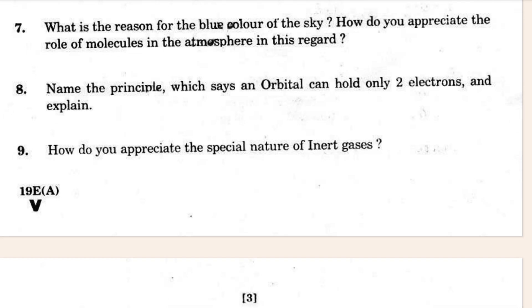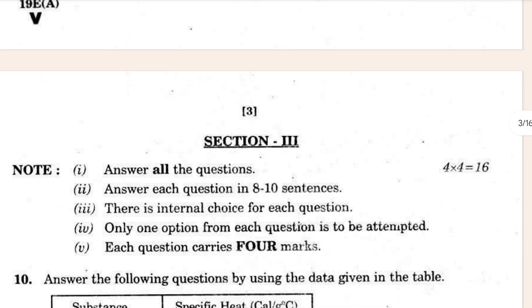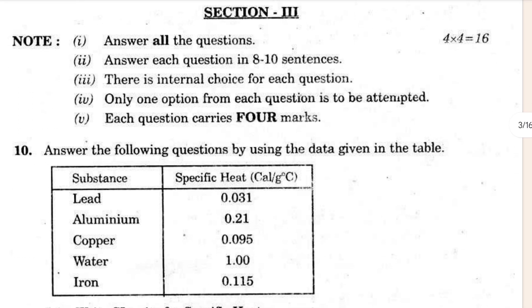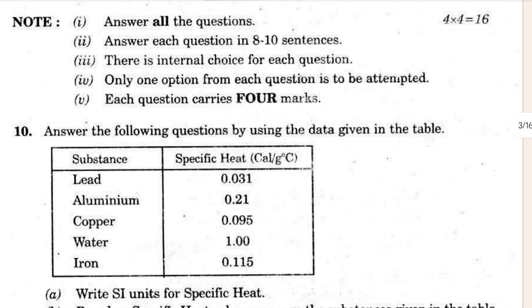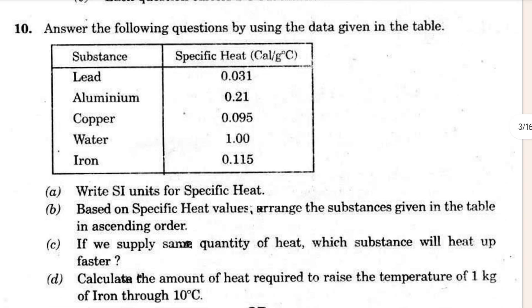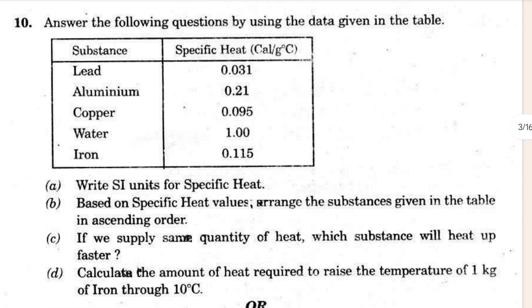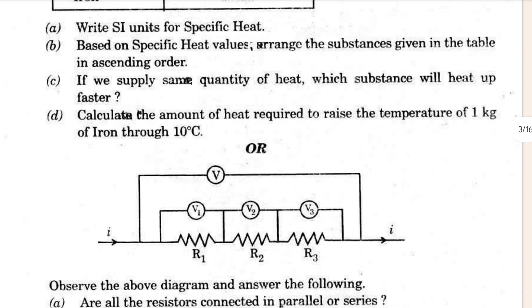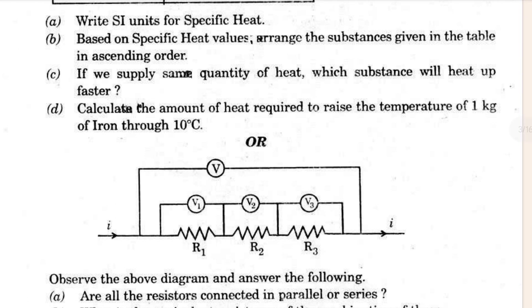Is it clear? If it is clear, then come to Section 3. In Section 3 you can see this is the 10th question — it says 'Answer the following questions by using the data given in the table.' Right, and then here some questions are given.